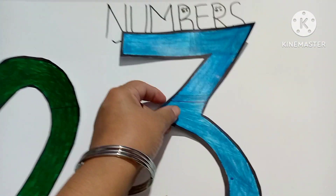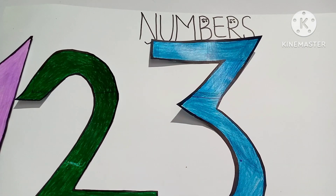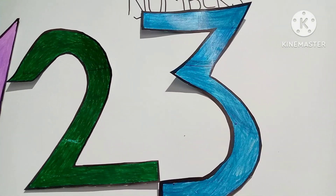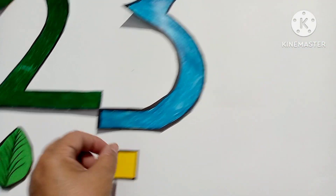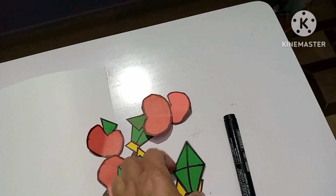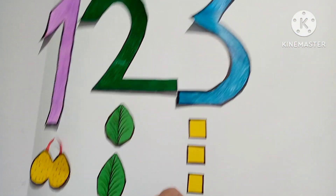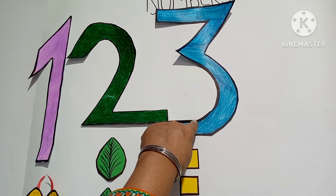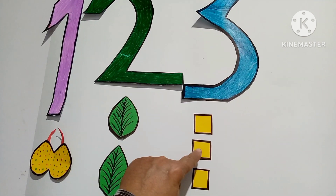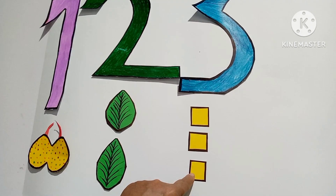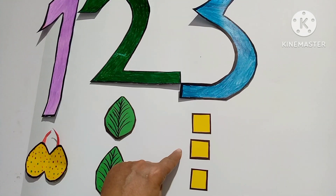Number three. This is number three. There are three squares — one square, two square, and three square. There are three squares.